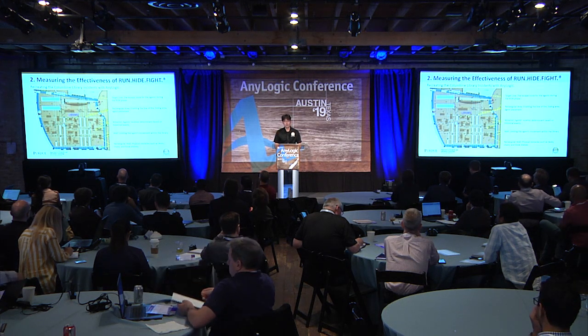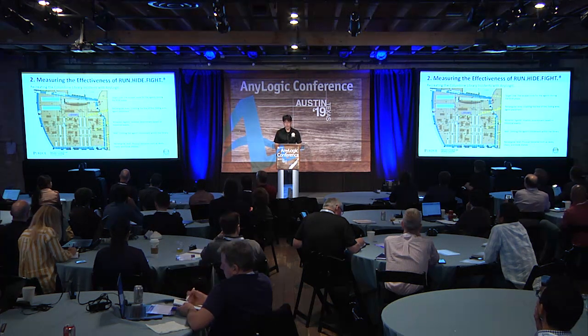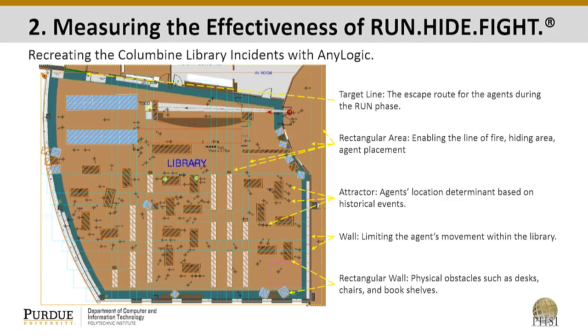As soon as we got this image, we wanted to recreate the library of Columbine High School at that time. We began to look into different images taken at that time, incident reports, anything we could get hold of. Once we gathered this information, we began to implement tools that AnyLogic provides in the pedestrian library — such as walls, rectangular walls, spaces, and all these features. We then began to think about obstacles in the library and how we could better implement a line of fire.